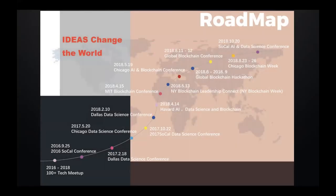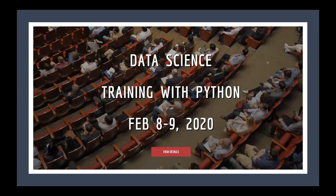This is our roadmap. We started in 2016 and we are moving very rapidly. We're hosting conferences, hackathons, and meetups at different companies and universities across the country. The upcoming event is a Data Science Training with Python, which is going to be in LA, California on February 8th and 9th. Go check it out.